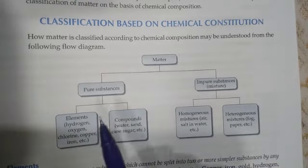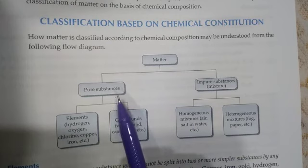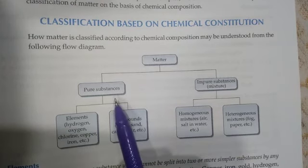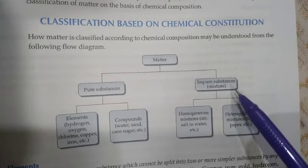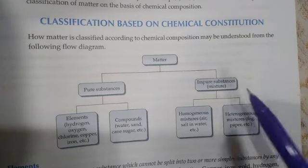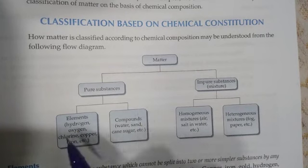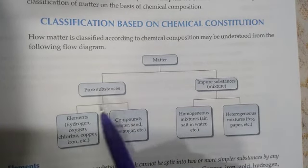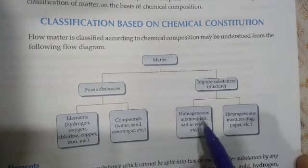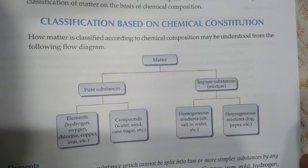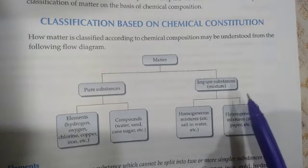Pure substances contain molecules of the same type, while impure substances contain molecules of different types. Elements and compounds are pure substances, while homogeneous mixtures and heterogeneous mixtures are impure substances. We will discuss mixtures later.